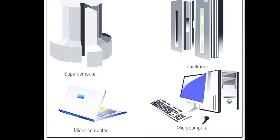Mainframe computers are quite different from mini computers. These computers are smaller but more expensive than super computers, and they are very fast. More than 100 people — in fact, hundreds of people — can use a mainframe computer at the same time, compared to only 10 people for a mini computer. Large-scale industries use mainframe computers in the design and manufacture of electronic goods and other machines. In large institutions, these computers are used to store and analyze data or to maintain a large network of computers.